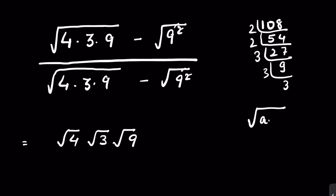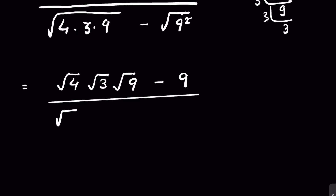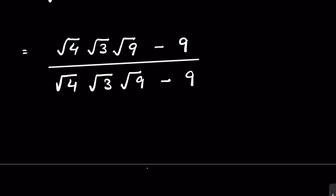We apply the rule: √(a×b×c) = √a × √b × √c. So √(4×3×9) = √4 × √3 × √9, minus 9, upon √4 × √3 × √9, minus 9. Now √4 = 2 and √9 = 3, so the numerator becomes 2 × 3 × √3 − 9, and denominator 2 × 3 × √3 − 9.